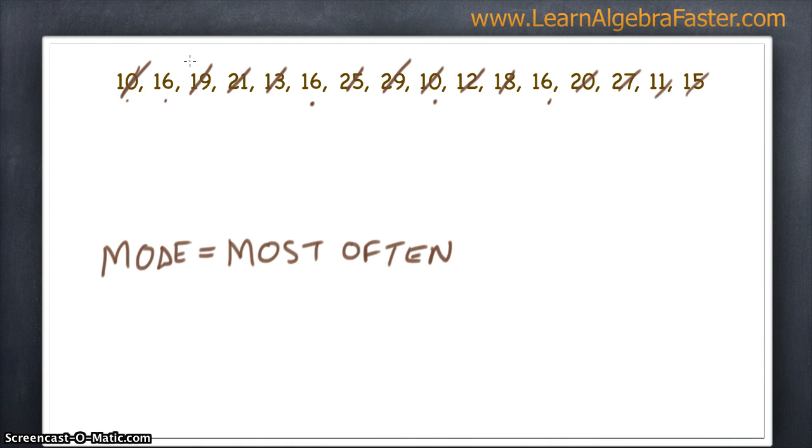Then we just continue going left to right through the set. And if the numbers don't have any repeats, then we know our mode is set. So we know that our mode is 16.